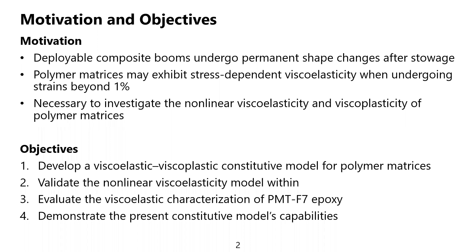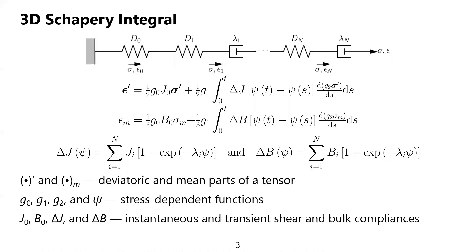Demonstrate the present constitutive model's capability. We choose the generalized Maxwell model, as shown at the top, as the viscoelasticity model. It has N branches. In each branch, it has a linearly elastic spring and a viscous dashpot.